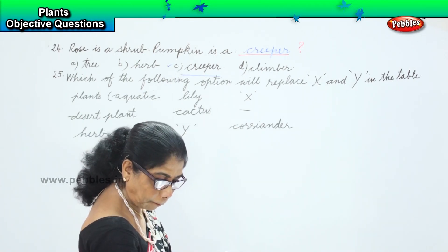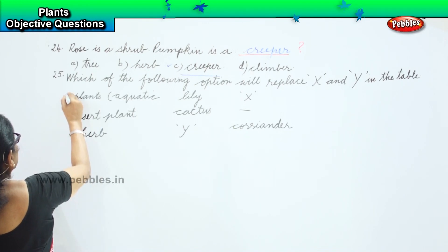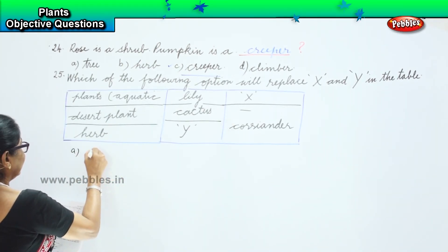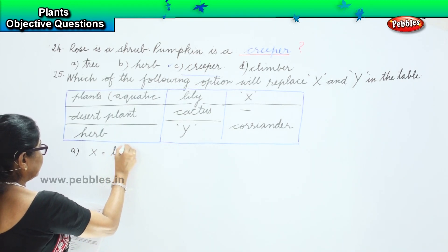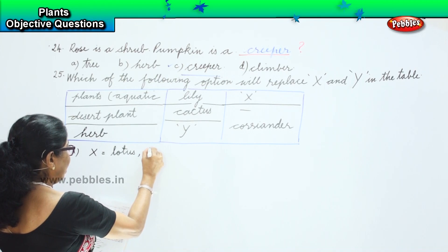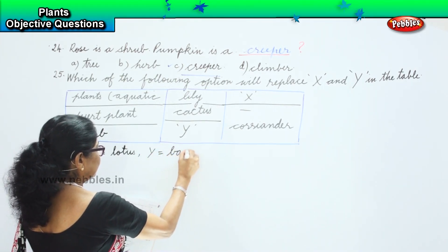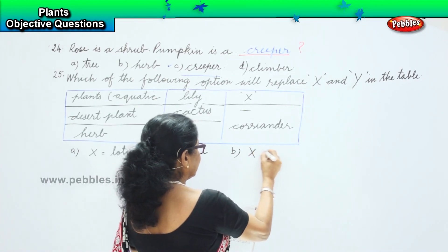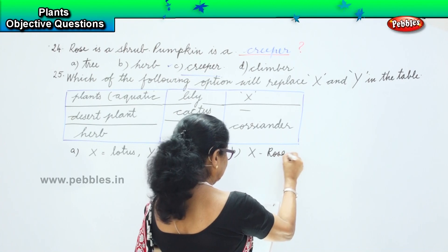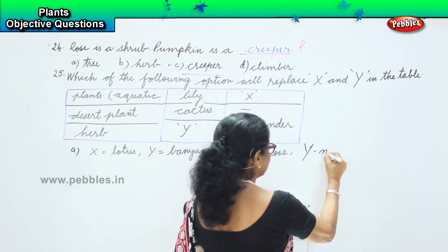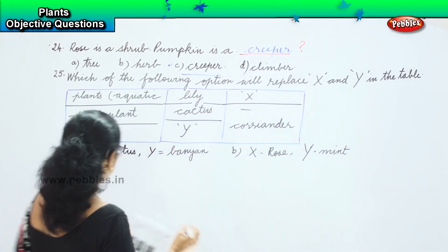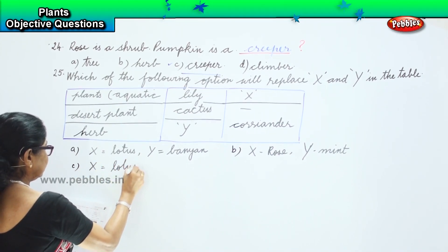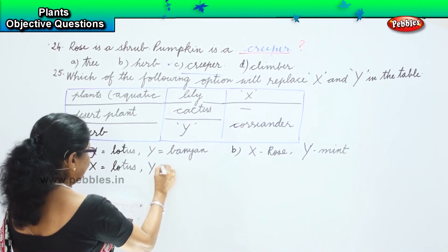The options are: A — X is lotus, Y is banyan; option B — X is rose, Y is mint; option C — X is lotus, Y is mint.